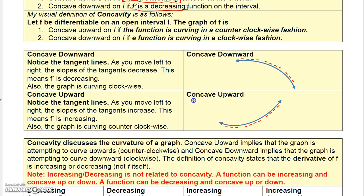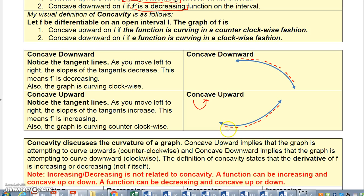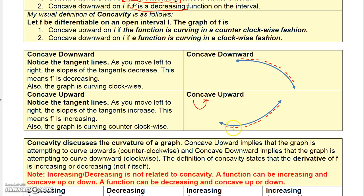Concave upward — what I tell students is the graph is trying to turn counterclockwise as you go left to right. Each one of these dashes represents the slope of the tangent line. Notice here the slopes of the tangent lines are negative, then over here they're positive, and up here they're even more positive. So the slopes of the tangent lines are increasing, which means the derivative of the function is increasing on the interval, and when that happens you have upward concavity.